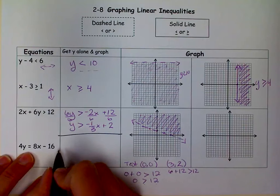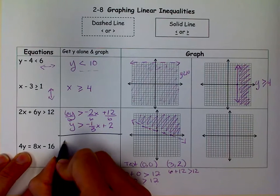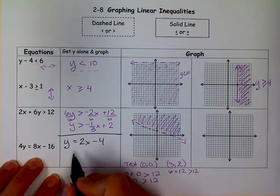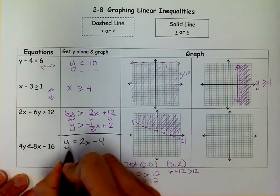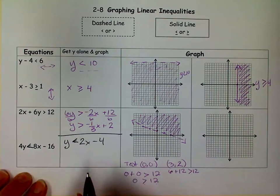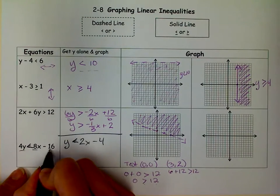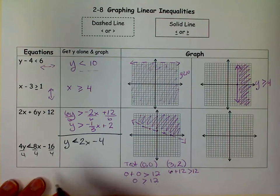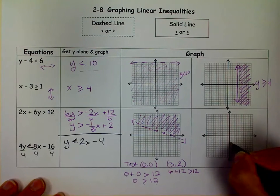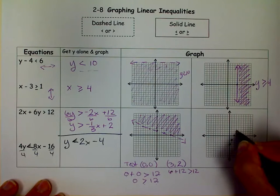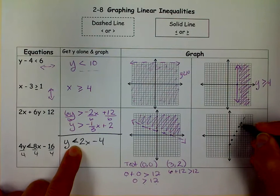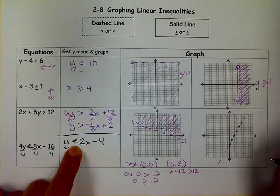Let's try this one. Here I'm going to get Y alone by dividing by 4. When I do that, I get Y is less than 2X minus 4. Over here, I go 1, 2, 3, 4. That's my Y intercept. My slope is 2, so I go up 2 over 1. Solid or dashed? Dashed, because there's no equals there. So I have a dashed line.